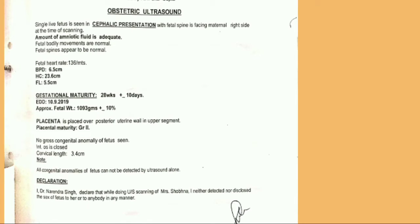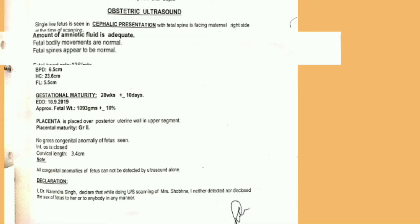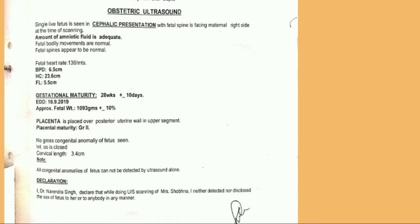The next line states that fetal body movement is normal — fetal means baby, and the movement of the baby is normal as written in this line. The following line says fetal spine is normal, which means the spinal cord of the baby is properly built and normal.